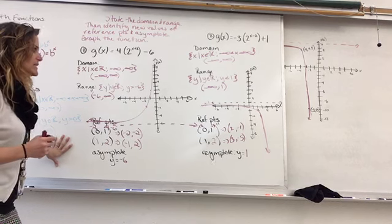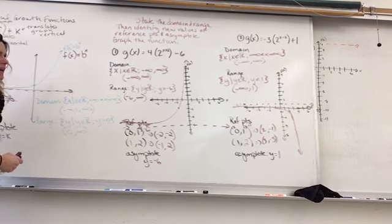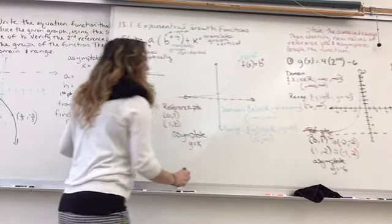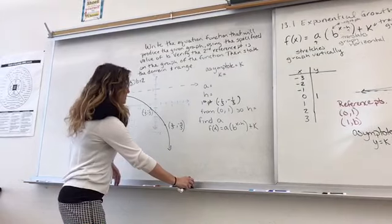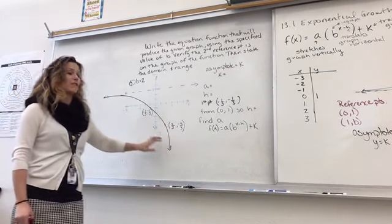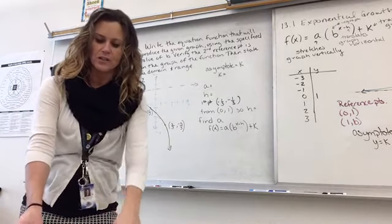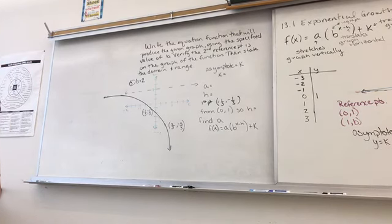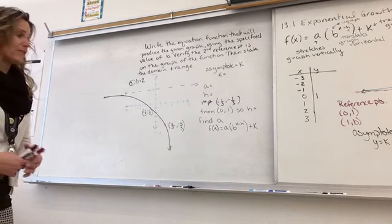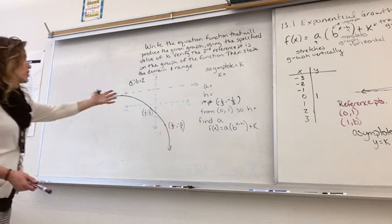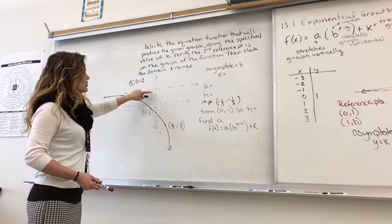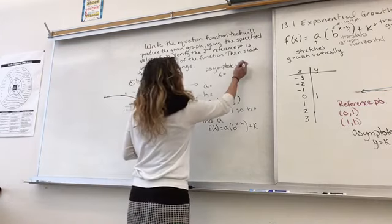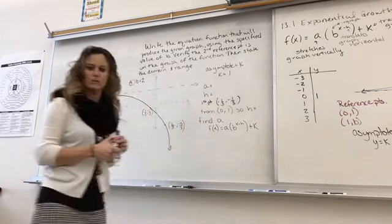Now we're going to write the equation from the graph. We have a picture with fractions. We write the equation from the function that produces the given graph using the specified value of B. The easiest thing to figure out is the asymptote, because it's drawn — that's 1. So my asymptote is 1, which means since asymptote equals K, K is 1.